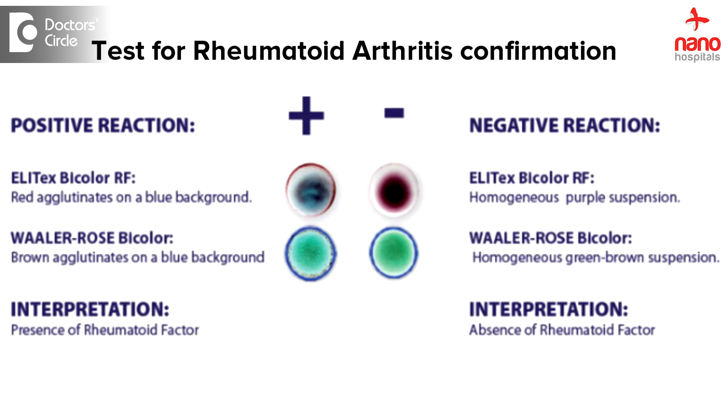Rheumatoid arthritis is entirely a clinical diagnosis depending upon seven criteria: morning stiffness, symmetrical arthritis, polyarthritis, small joint arthritis, rheumatoid factor, rheumatoid nodules, and X-ray findings. These are the seven criteria on which rheumatoid arthritis has to be diagnosed, and not based on ANC's or RNC's.